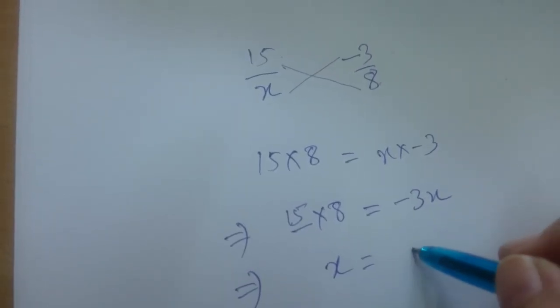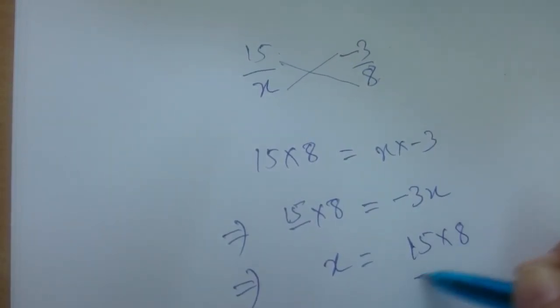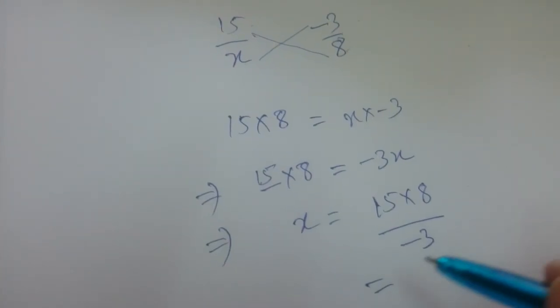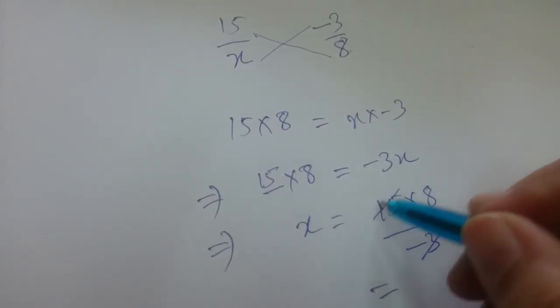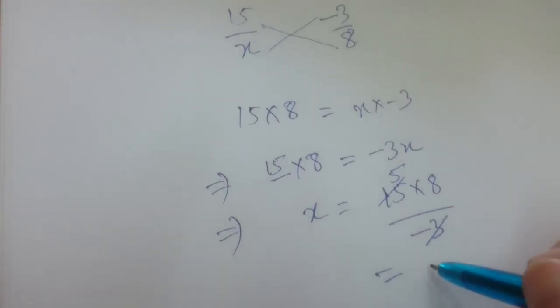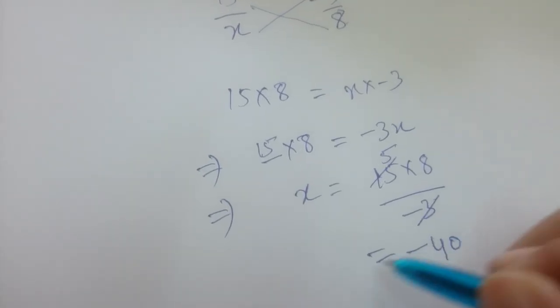This implies x equals (15×8)/(-3). The answer is x equals -40.